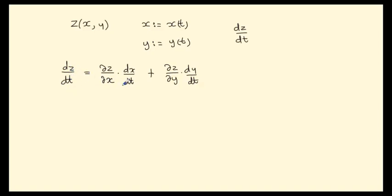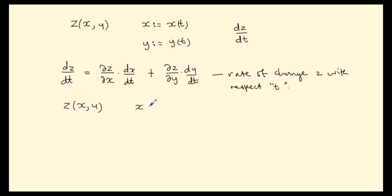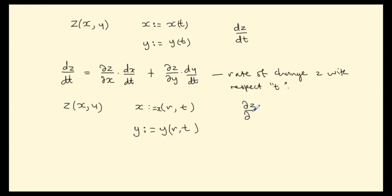We concluded that this gives us the rate of change of z with respect to t. Now in this presentation, we're going to extend this to a situation where we still have a function z of x, y, but x is now given as a function of two variables, say r and t, and y is also given as a function of two variables r and t. This will require us to be more careful in our use of tree diagrams in order to compute the partial derivative of z with respect to t or with respect to r.